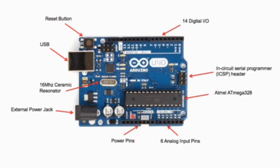The sensors we connect to the analog input pins need to be given power. We supply power to them from the Arduino board itself through the power pins. Here, if you look closely, there are a 5-volt pin, a 3.3-volt pin, and a Vin (voltage input) pin — from these we give power to the sensors as required.